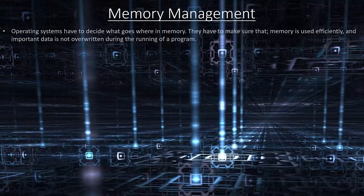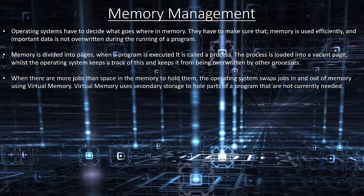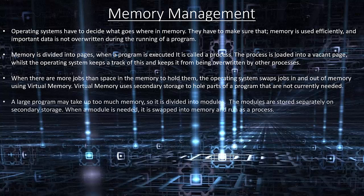Memory management. Operating systems have to decide what goes where in memory, making sure that memory is used effectively and important data is not overwritten. Memory is divided into pages; when a program is executed it is called a process. The process is loaded into a vacant page, whilst the operating system keeps track of it and prevents it being overwritten by other processes. When there are more jobs than space in memory, the operating system swaps jobs in and out using virtual memory. Virtual memory uses secondary storage to hold parts of a program not currently needed. A large program may be divided into modules stored separately on secondary storage; when a module is needed it is swapped into memory and run as a process.